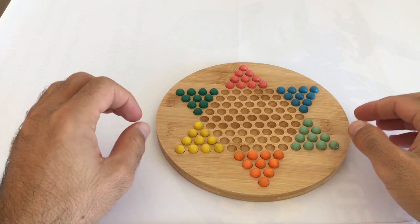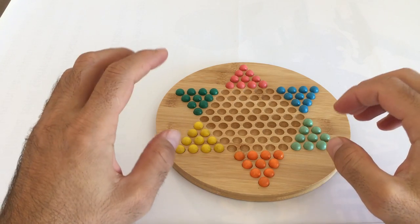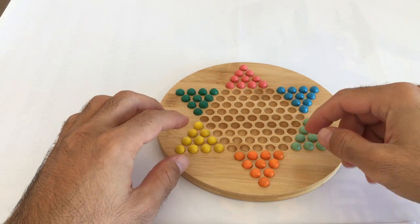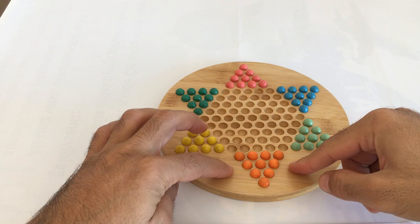If two people play, both take 10 balls of the same color and place them in the 10 holes in their home base. For example, if I took orange ones,